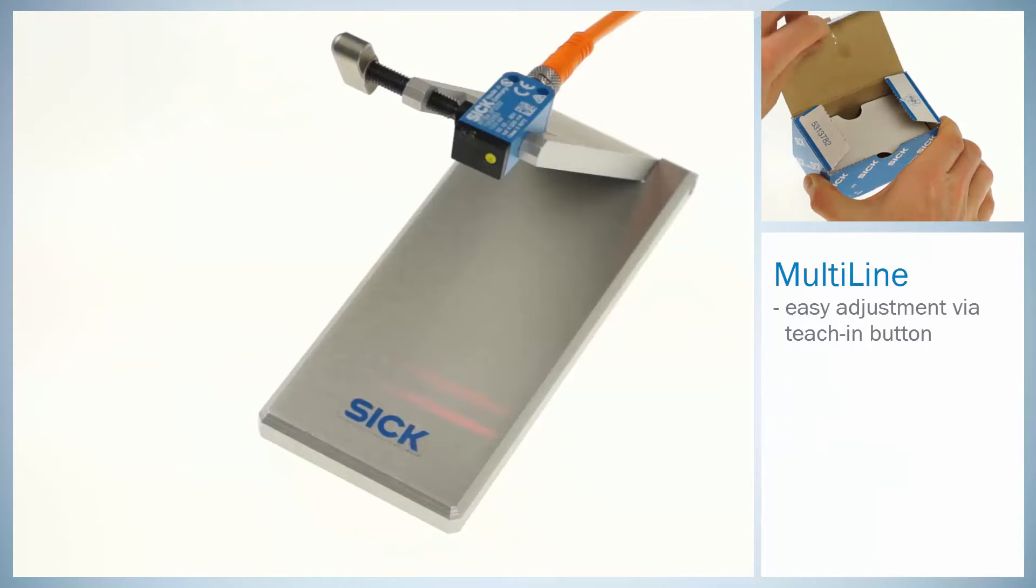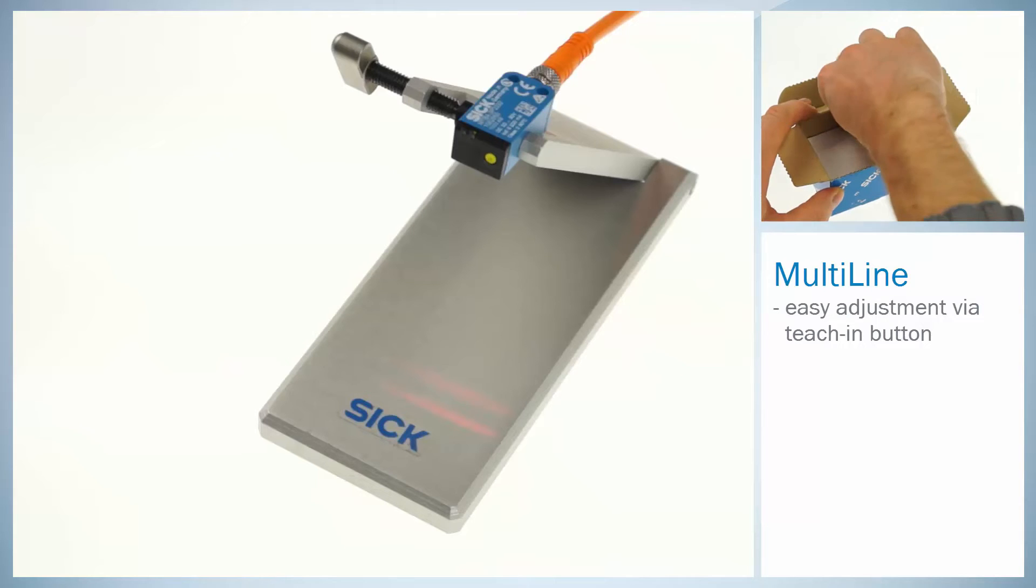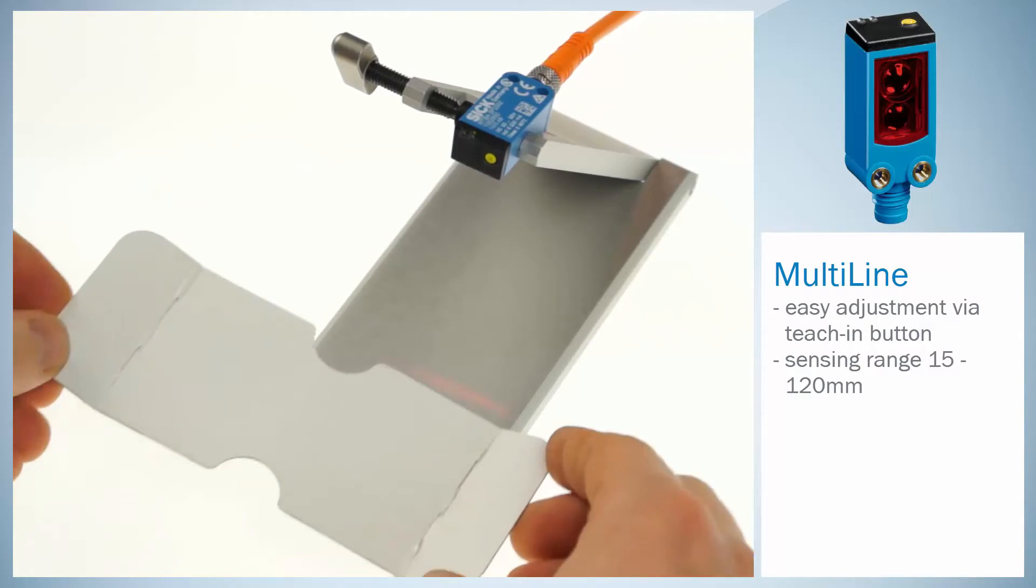Via the teach-in button it is very simple to adjust the multi-line. The optimum sensing range is between 15 and 120 millimeters.